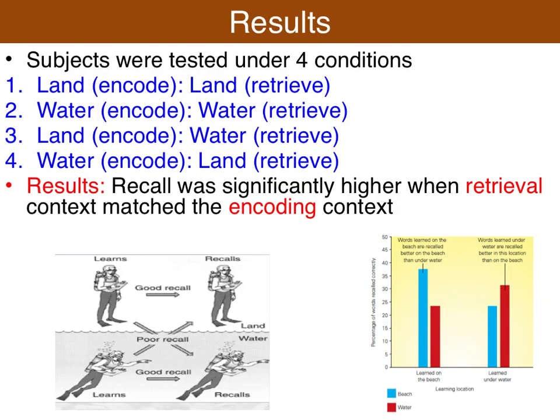The results backed up the theory: when the retrieval context was the same as the encoding context, results were significantly higher. When there was a mismatch between the retrieval context and the encoding context — so they encoded on land and were asked to retrieve on water — results were significantly lower.